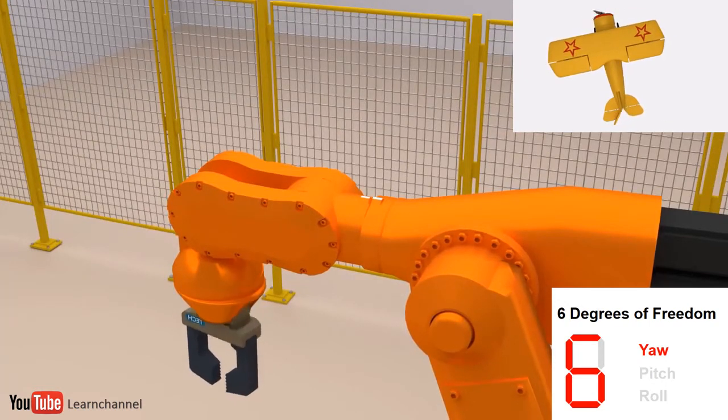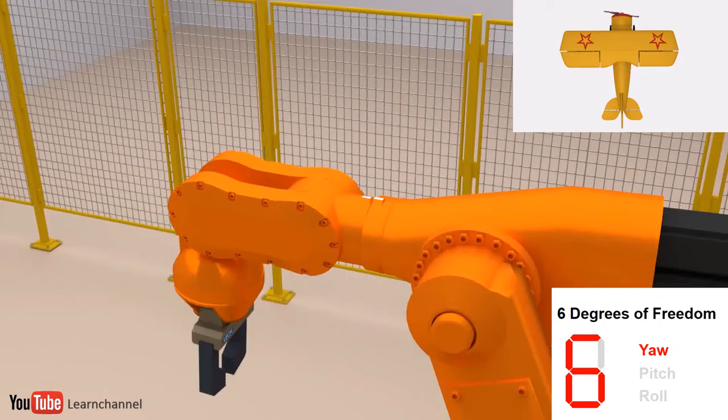So you get a maximum of 6 degrees of freedom. You would use this robot for applications like complex mounting, arc welding, and painting.